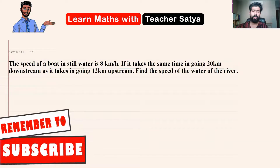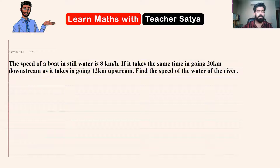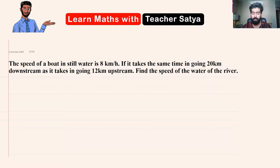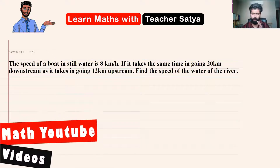So what do we have from this question? The speed of the boat in still water is 8 kilometers per hour. If it takes the same time going 20 kilometers downstream as it takes going 12 kilometers upstream, find the speed of the water of the river.